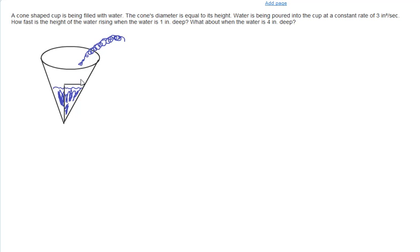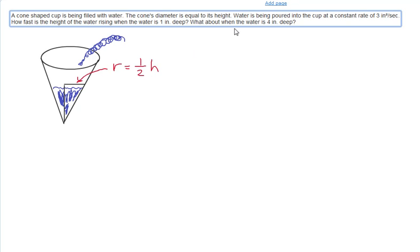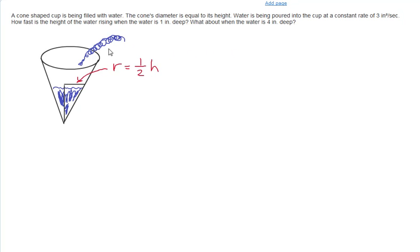And we have a radius. We're told that this radius is half the height. We are also given that the water is flowing in at a constant rate. So that water is coming in as a volume.